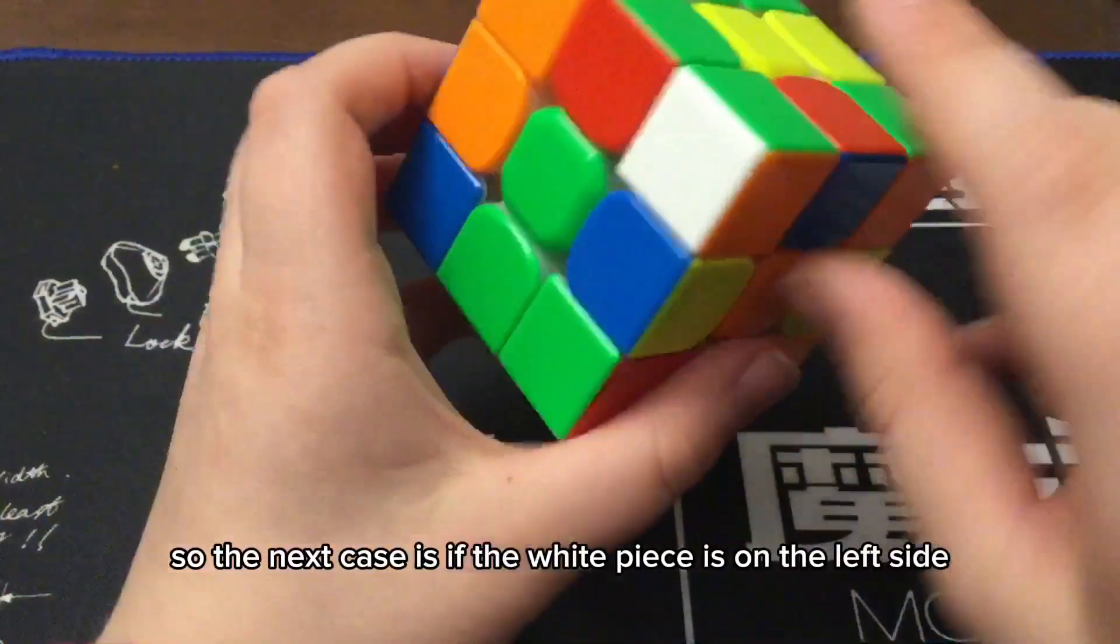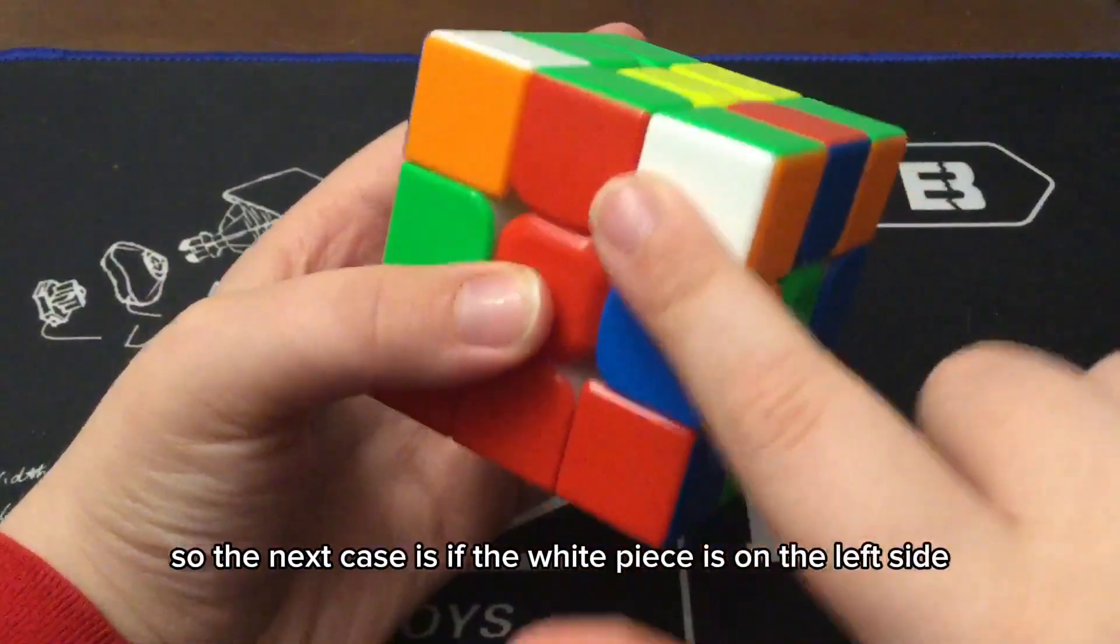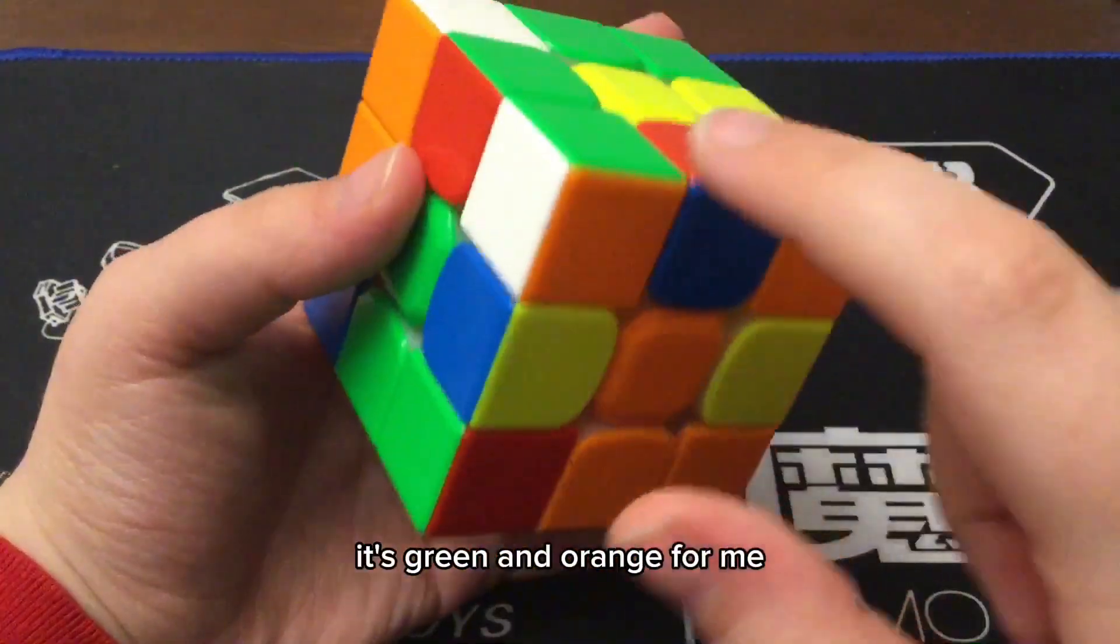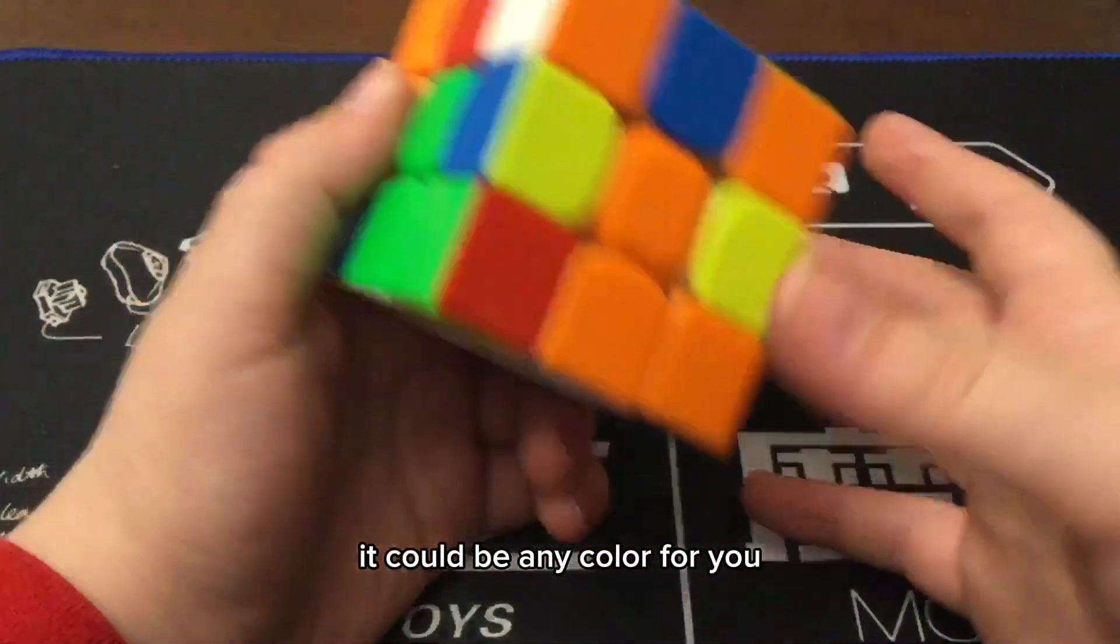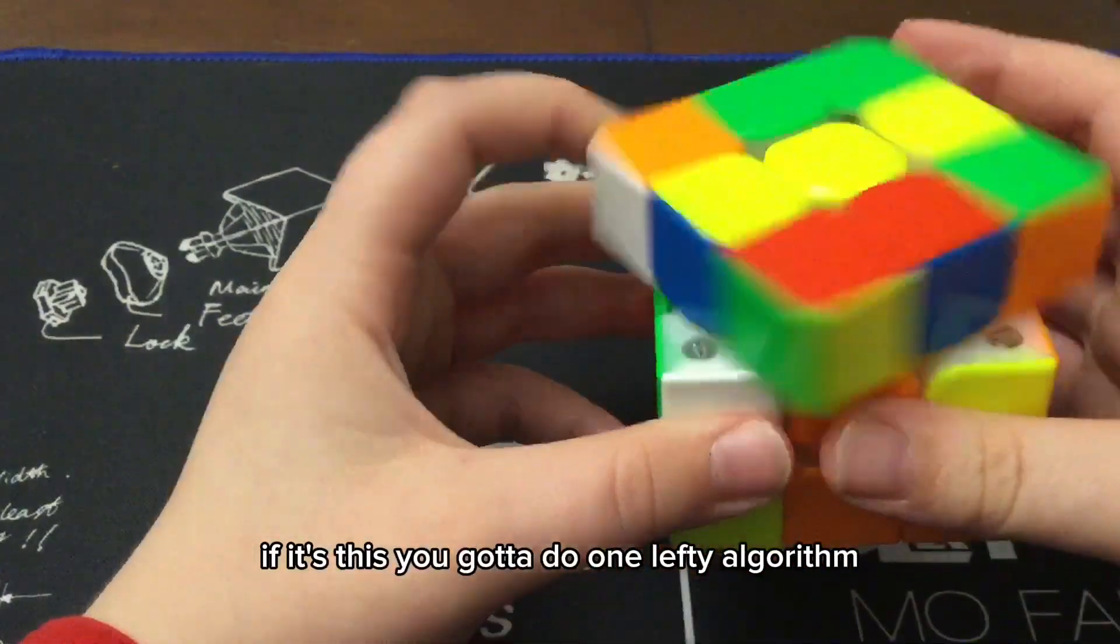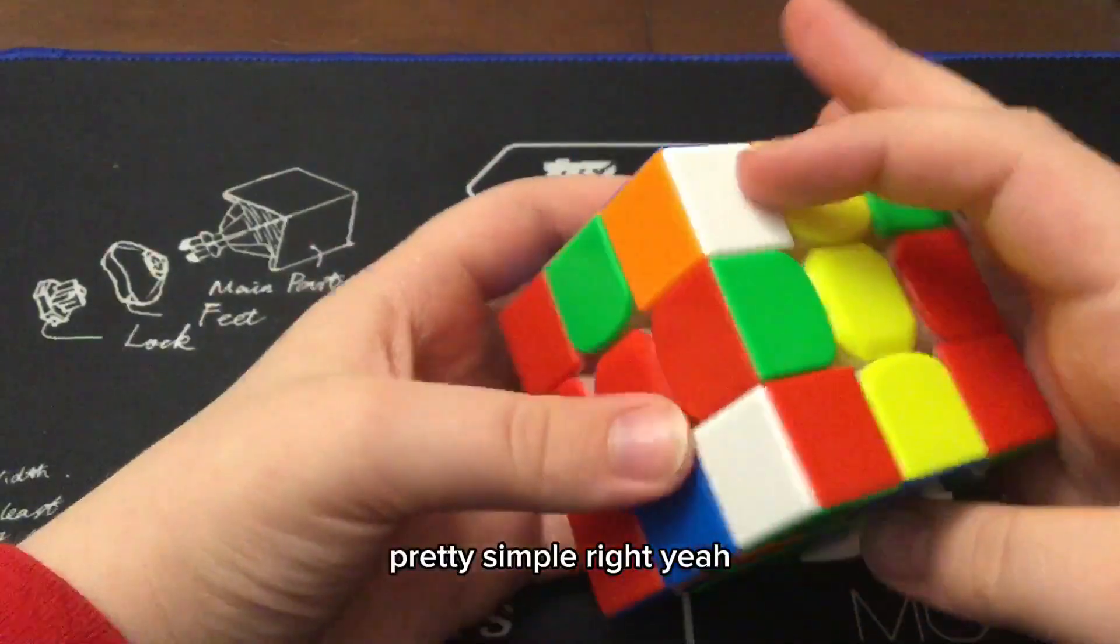The next case is if the white piece is on the left side. Look at the two other colors and bring it in there. It's green and orange for me. It could be any color for you. If it's this, you gotta do one lefty algorithm. Pretty simple, right?